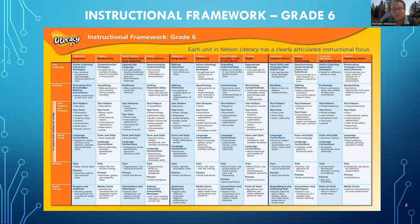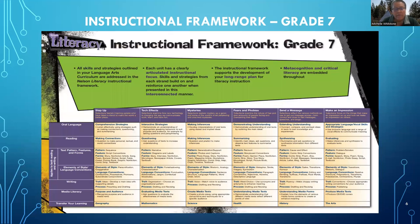And 6 Traits writing is integrated as well. Here is grade seven — there are six units. The components down the side include oral language, reading, text pattern, features and forms, elements of style, language conventions, writing, media literacy, and transferring your learning. Again, that interdisciplinary component includes geography, math, science, health, history, and the arts.